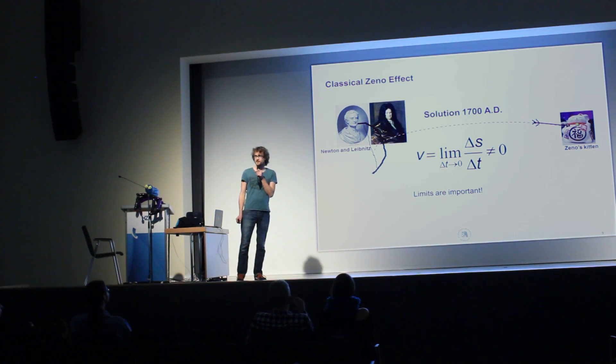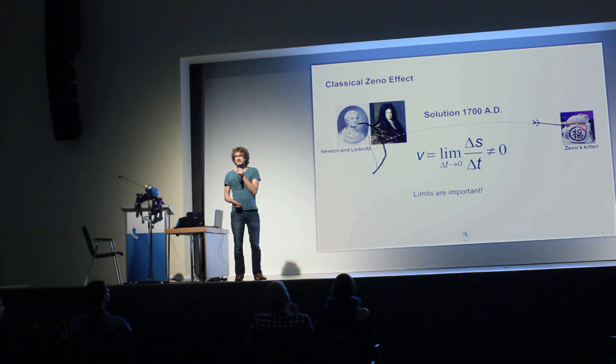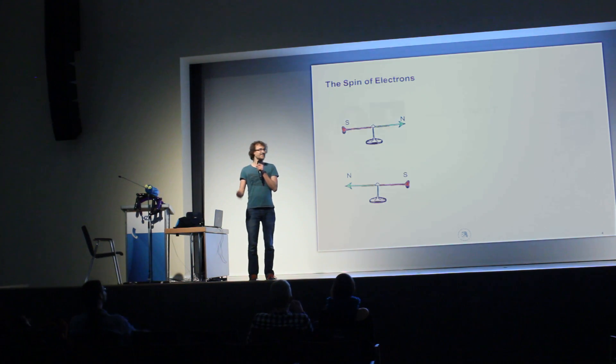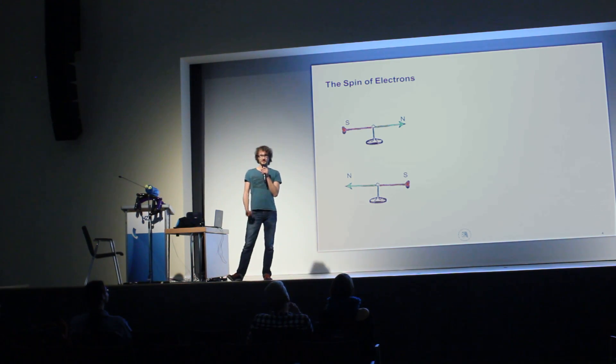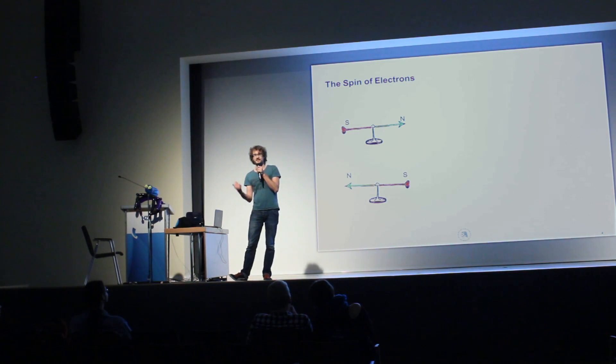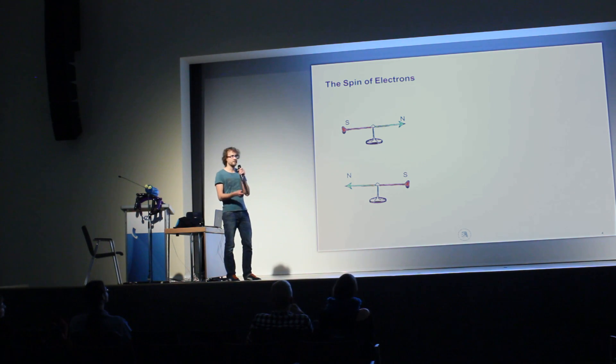So most of you studied some science, so who knows what a spin is? Well, that's quite good. Well, a spin is something like an arrow. But it's a very special arrow, so it's an arrow that can point either to the left or to the right. Nothing in between. So only left or right.